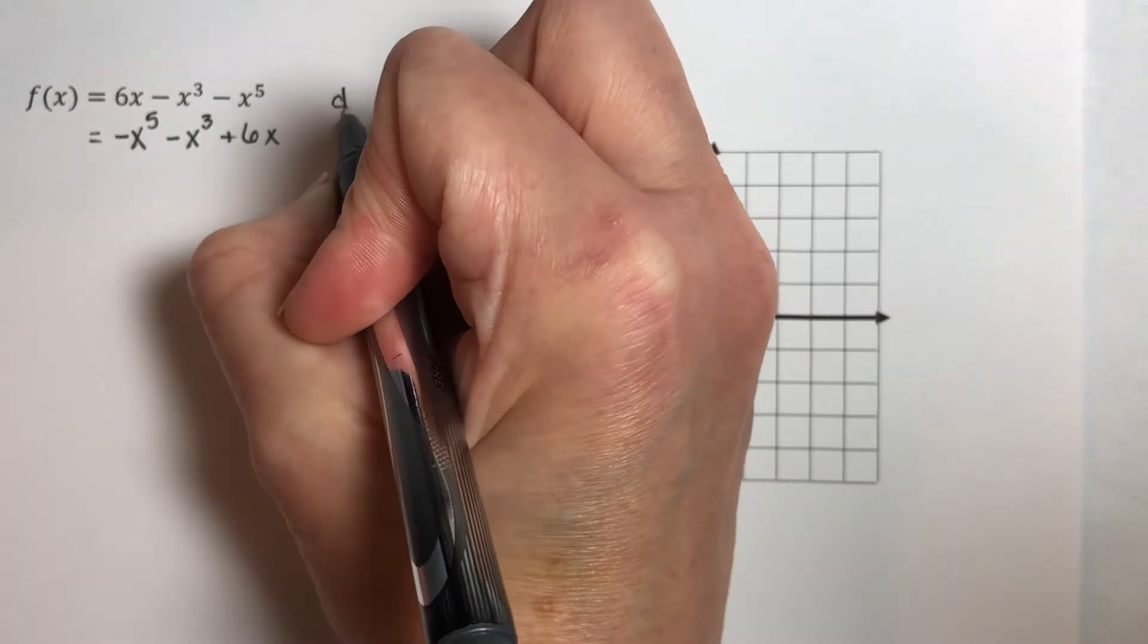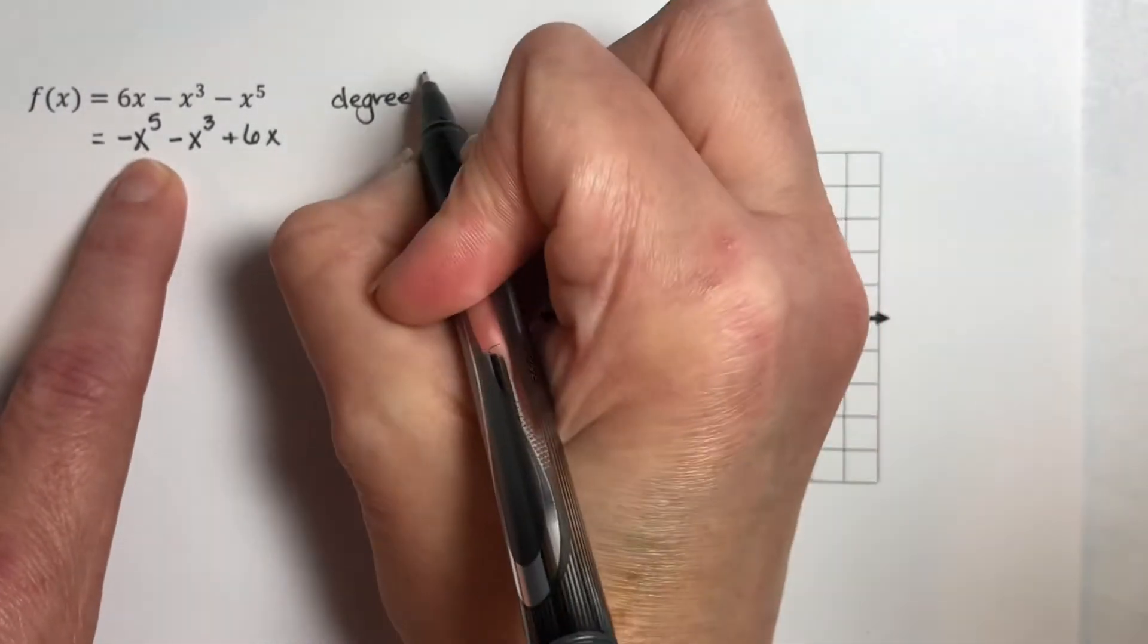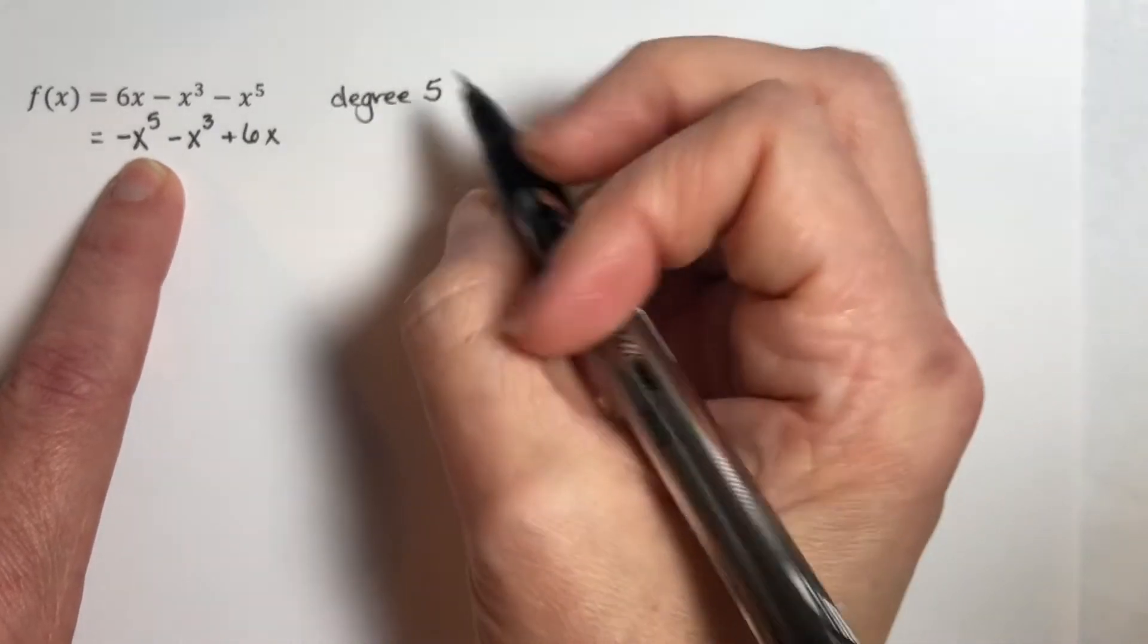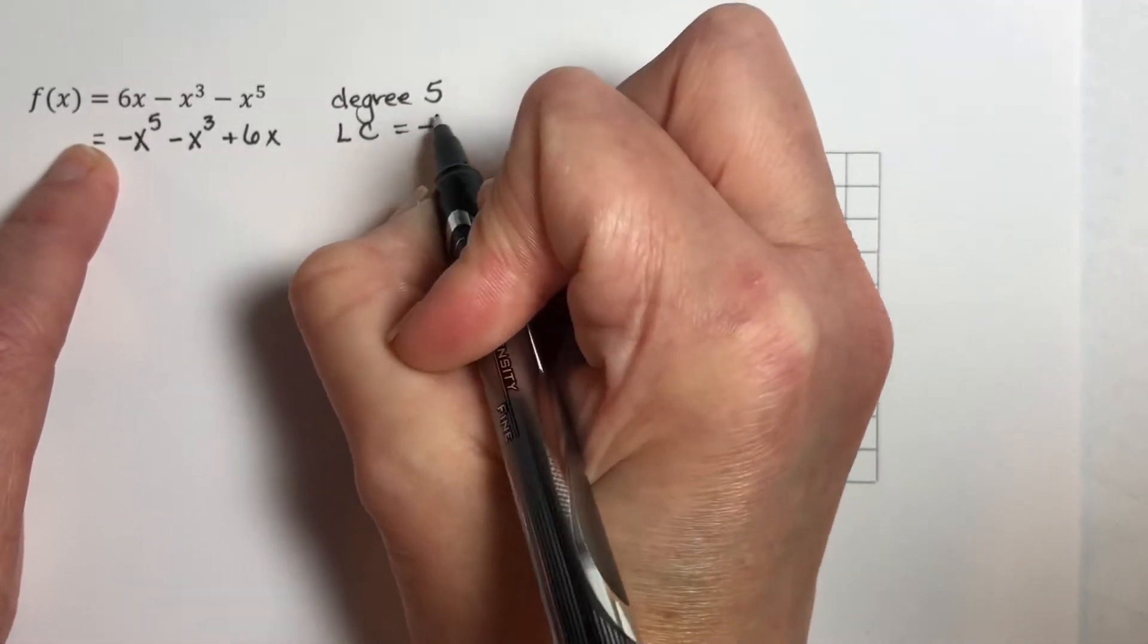The degree of this is our largest exponent, which is 5, and our leading coefficient is negative 1.